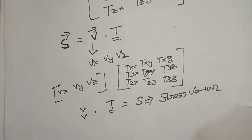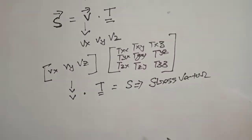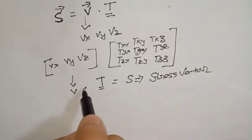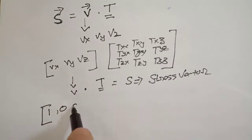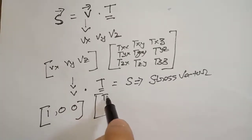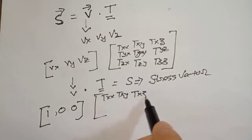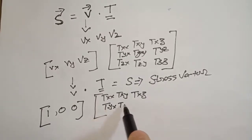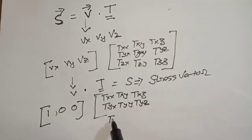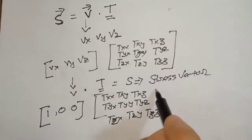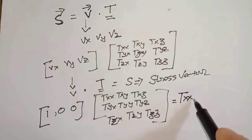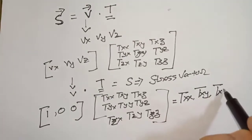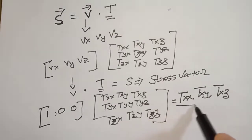Now if I consider the vector v to be [1, 0, 0] — so v_x = 1, v_y = 0, v_z = 0 — and take the dot product with the stress tensor matrix, because of the zeros it will only yield the components T_xx, T_xy, and T_xz.